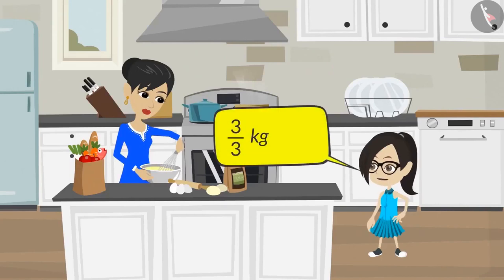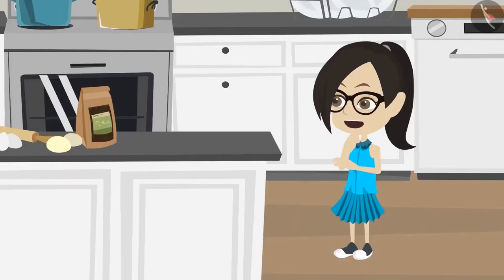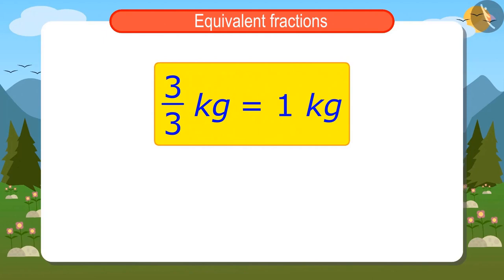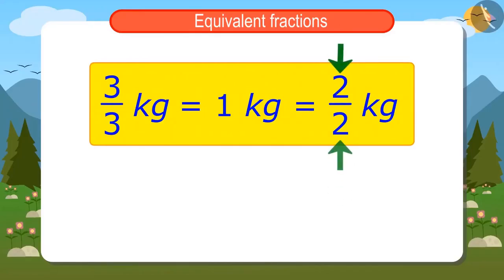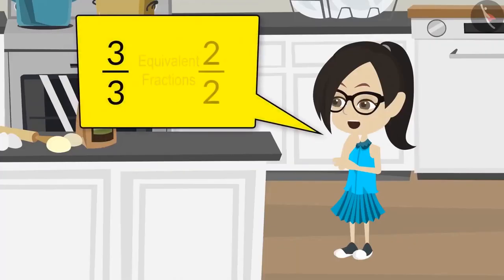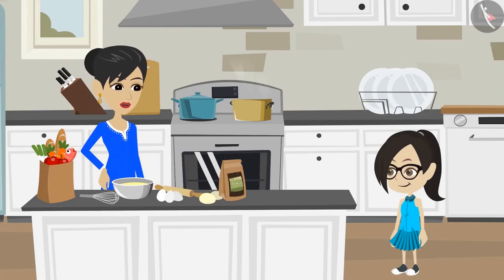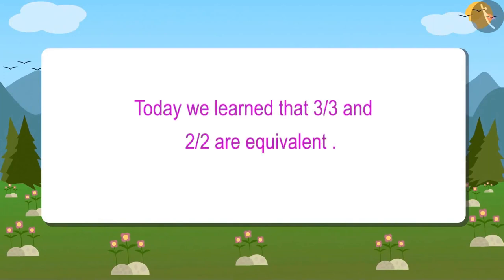Vandana tells mummy: I have discovered that 3 upon 3 kilograms of potatoes will be 1 kilogram of potatoes. Mummy says well done and tells her to go bring the potatoes. But Vandana first wants to know something: just like 3 upon 3 kilo has 1 kilo of potatoes, she thinks 2 upon 2 will also have 1 kilo, because by dividing a kilogram into 2 equal parts, both its parts written together are 2 upon 2. Mummy confirms: when there is the same number in the numerator and denominator, it means we are talking about the whole quantity. This means 3 upon 3 and 2 upon 2 are equivalent fractions. Today, we learned that 3 upon 3 and 2 upon 2 are equivalent fractions.